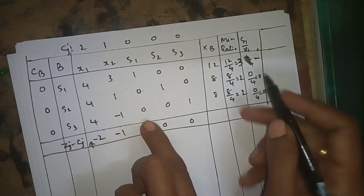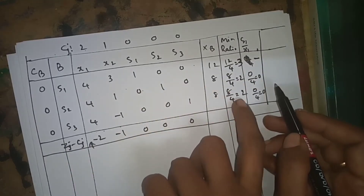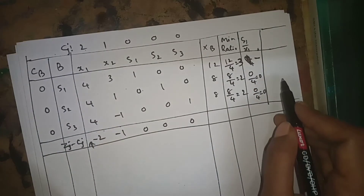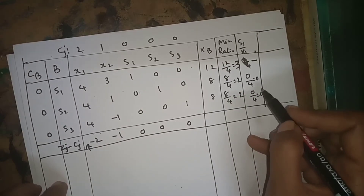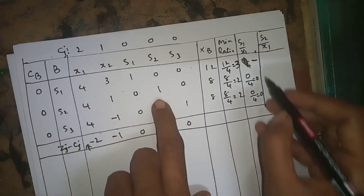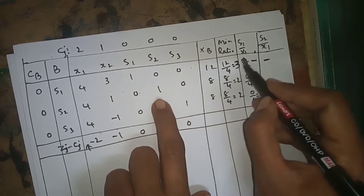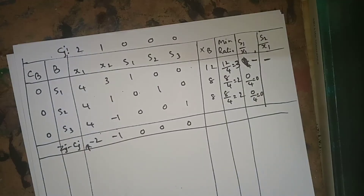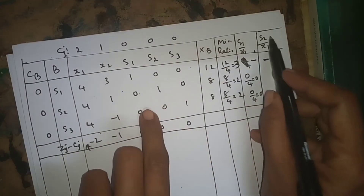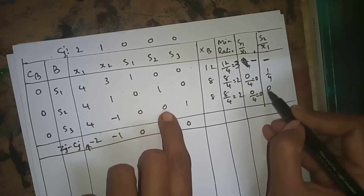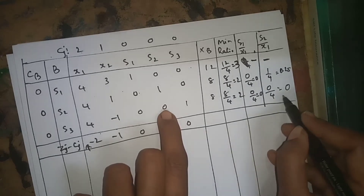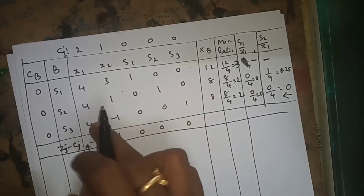Whenever a tie occurs again, we move to the next column of the identity matrix. We skip wherever we already have a unique value and go to s2 by x1 for the tied rows. s2 by x1: 1 by 4 is 0.25, and 0 by 4 is 0. The minimum is 0, so the pivot row is the third row. The coincide (pivot) element is 4. Whenever degeneracy occurs, go through the identity matrix columns until you get a unique minimum ratio.